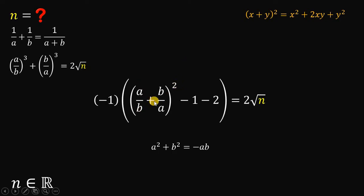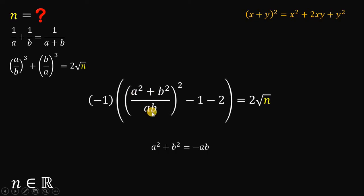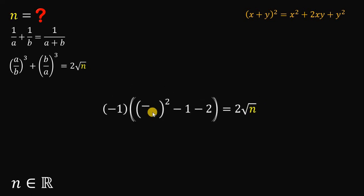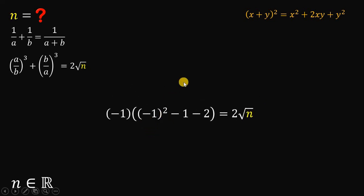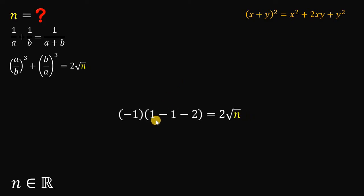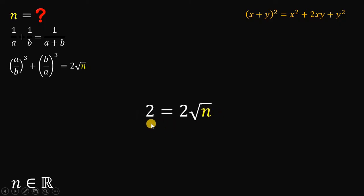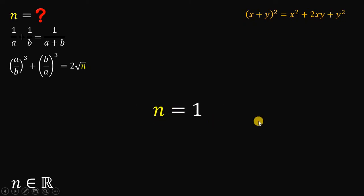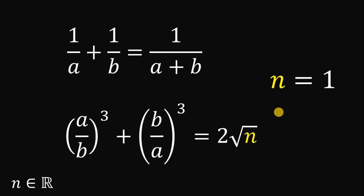Now, a over b plus b over a gives us (a squared plus b squared) over ab, and since a squared plus b squared equals negative ab, this simplifies to negative 1. So negative ab over ab is just negative 1. Simplifying everything: negative 1 squared gives positive 1, and 1 minus 1 is 0, while negative 1 times negative 2 gives positive 2. The left-hand side is 2, and since 2 equals 2 times the square root of 1, the value of n must be 1. Therefore, our answer is n equals 1.